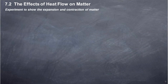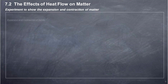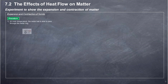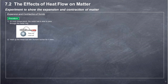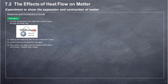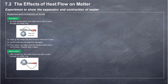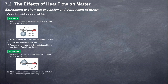Experiment to show the expansion and contraction of solid. Procedure: At room temperature, the metal ball is able to pass through the metal ring. Heat up the metal ball with a Bunsen burner for 5 minutes. Let the ball pass through the ring again. Pour some cool water over the heated metal ball to cool it down, then repeat. Observation: After heating, the metal ball is not able to pass through the metal ring. After cooling down with cool water, the metal ball is able to pass through the metal ring again.